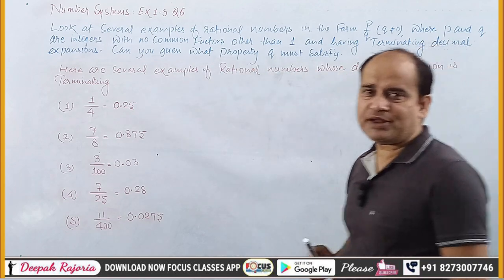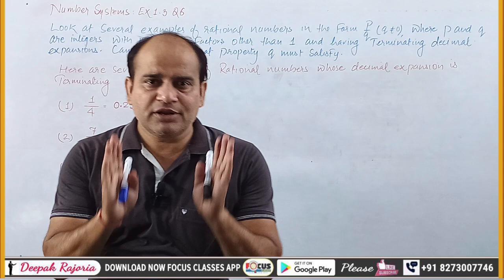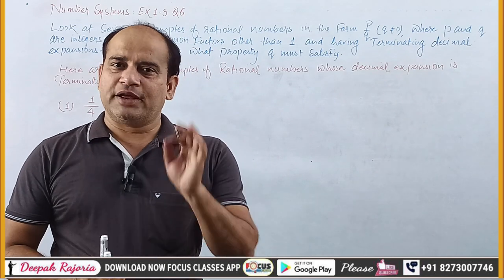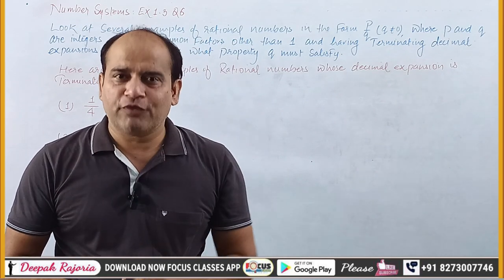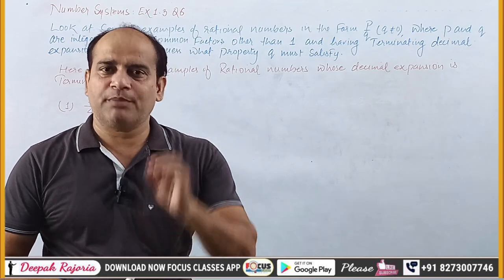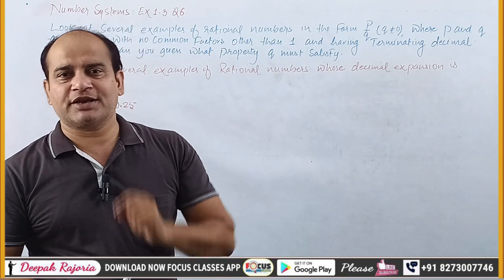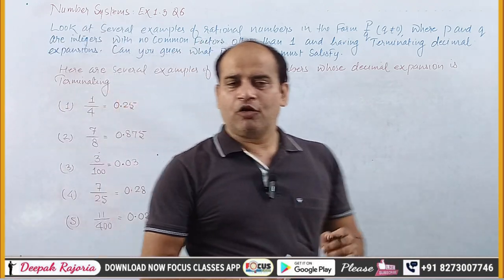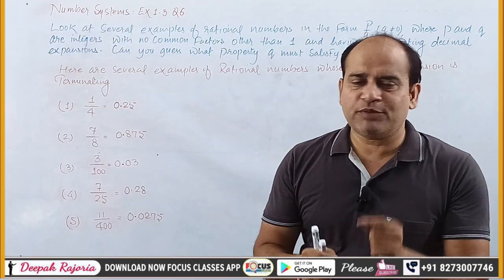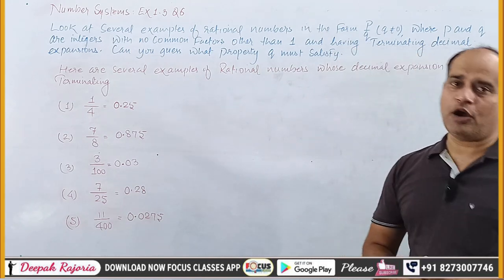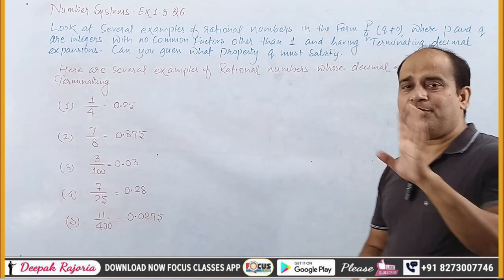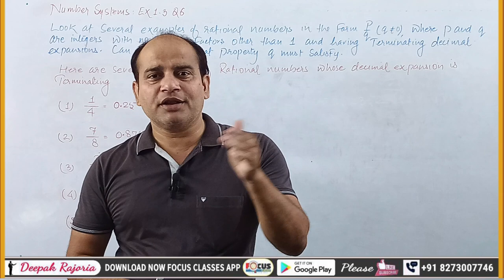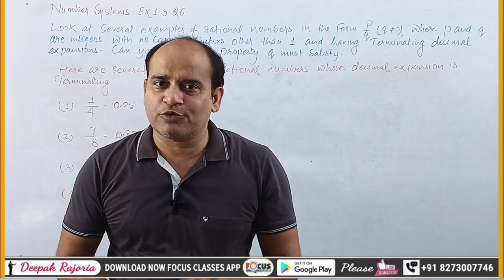So question number 16 says: look at rational numbers in the P upon Q form, where P and Q are integers with no common factor other than 1. And their decimal expansion is a terminating decimal expansion.